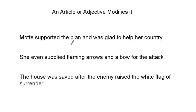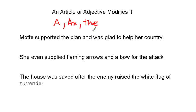An article or adjective modifies it. There are three articles: a, an, the. The articles 'a' and 'the' are just very simple adjectives that are going to be modifying nouns. Adjectives always modify nouns. You might have a string of adjectives and they're always going to be modifying that one noun — for example, 'the bright red car': bright and red are both modifying 'car,' as well as 'the.' So let's look for the articles in this sentence.